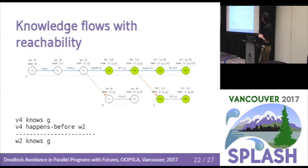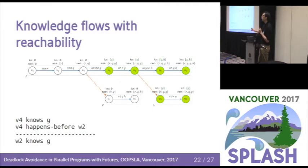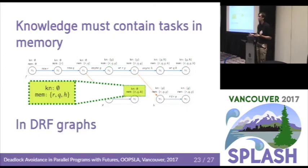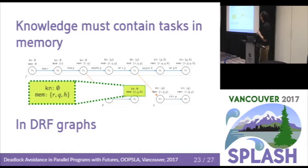We extended the computation graph with information about the known set — what tasks each node knows — and we annotated memory values being communicated: whenever you create a memory location you add it to your local memory, and whenever you read a value you add that name to the set. The proof strategy examines how values and names flow in the graph. For example, we show that knowledge flows with the happens-before relationship — if node v4 happens exactly after spawning task A and v4 knows A, then any node connected to it also knows A.